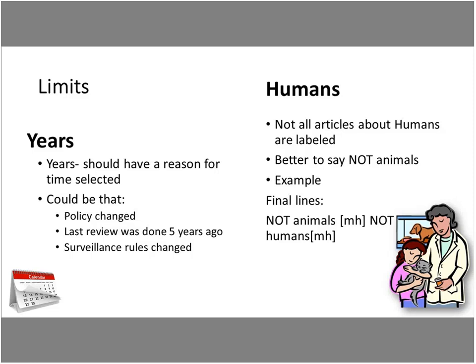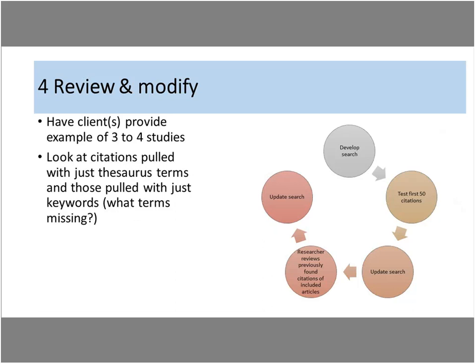The year limit is interesting — Cochrane says there should be a reason for selecting a certain time period, not just 'the last 10 years.' Reasons might include a policy change, surveillance rule change, or when the last review was done. I see many published reviews that never really justify the years — it's just something Cochrane asks for.